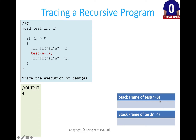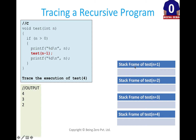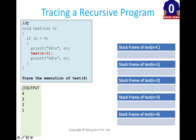We pass n minus 1, so n equals 3. Now 3 is greater than 0, so we print 3, and another recursive call is made with 2. Then we're in a call with n=2, which is greater than 0, so we print 2, and another recursive call is made with 1. When n=1, 1 is greater than 0, so we print 1 and make a recursive call with n=0.